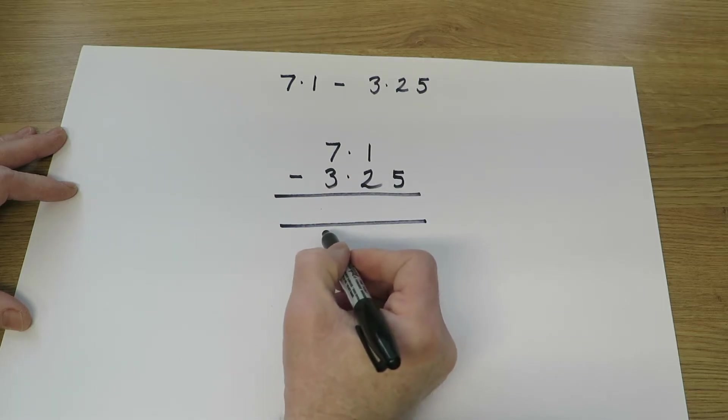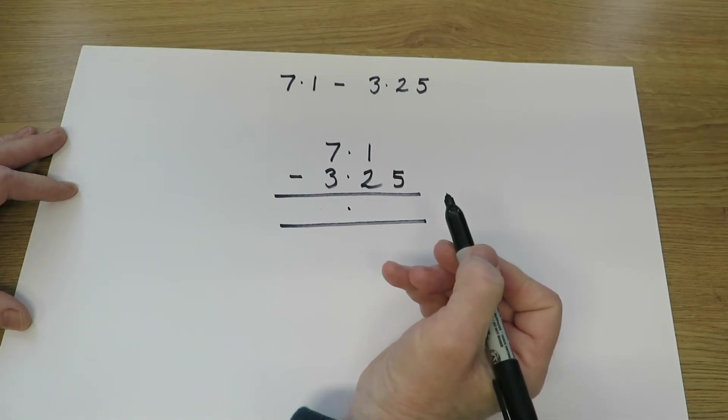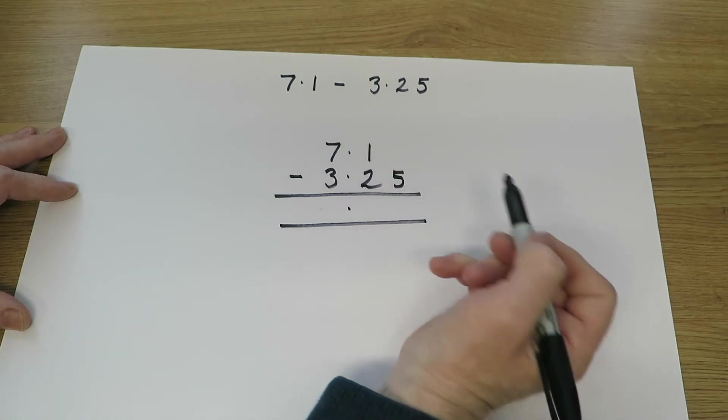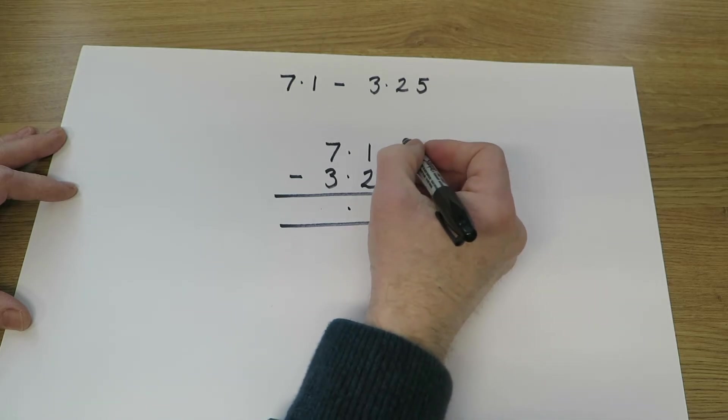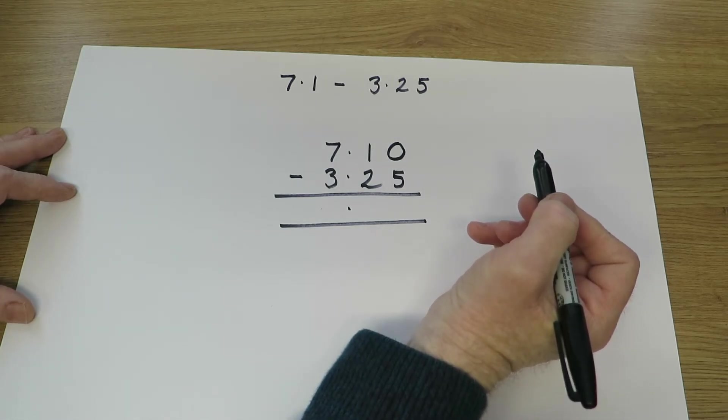So there's the units column. The decimal points are also in line, and we can put one ready there. The tenths are in line. And of course we've only got 5 hundredths. Now it makes life simpler if we put a zero up there. 7.10 has exactly the same value as 7.1.